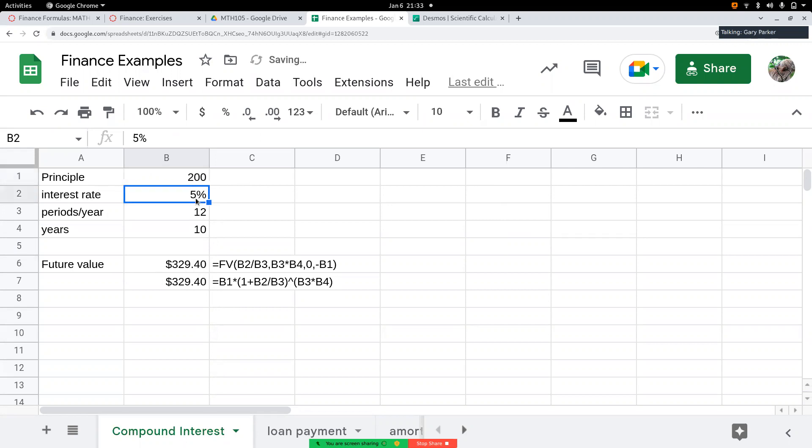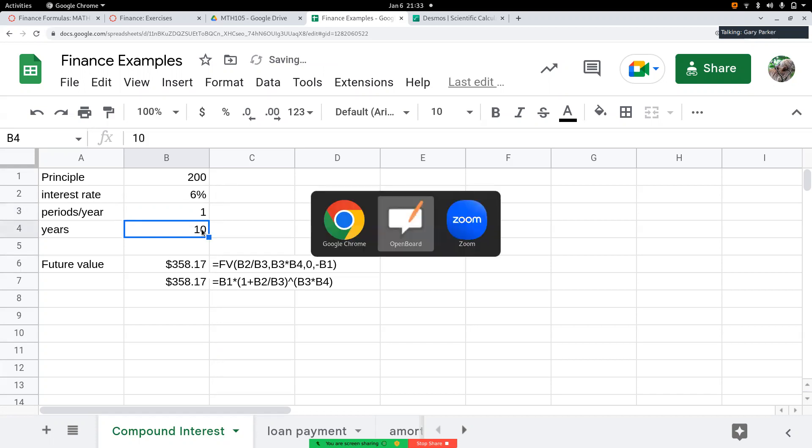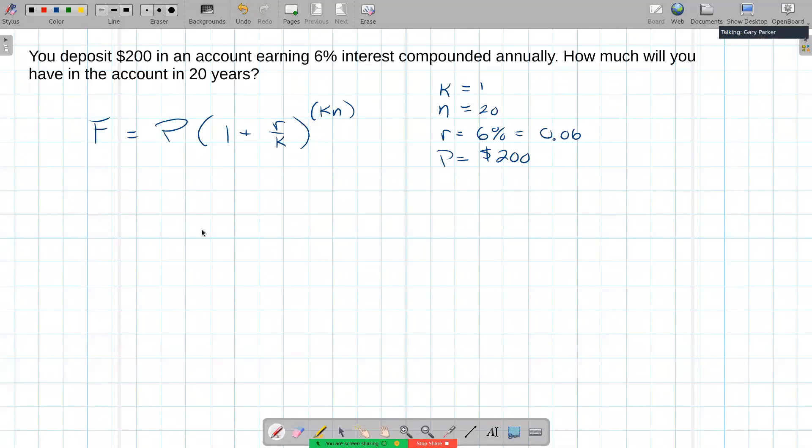We want 6% interest per year. Periods per year is annual, so that's just going to be one period per year. And then the number of years, we have 20.